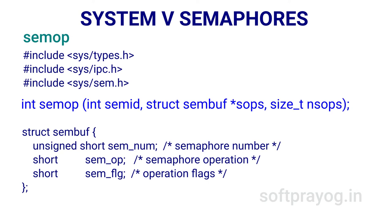A positive semop means increment, and semop of +1 means the V operation. A semop of 0 means wait until the semaphore value is 0. The last member of struct sembuf is semflg. If IPC_NOWAIT is set, the semop does not block — if an operation would normally require blocking but IPC_NOWAIT is set, the call returns immediately with nothing done and errno is set to EAGAIN.